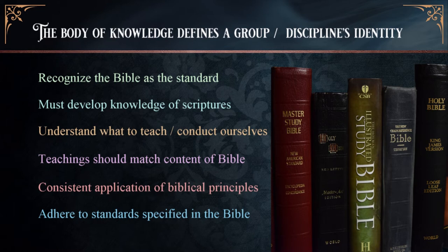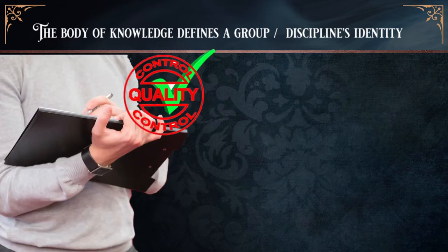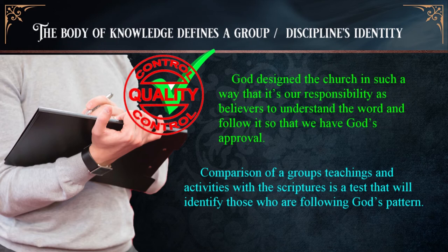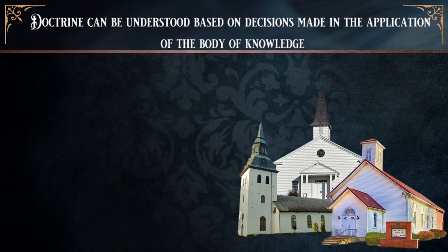Understanding the scriptures ultimately identifies us as followers of God and provides a consistent experience for those around us. There are groups who claim to teach the doctrine of the Bible, but close analysis reveals alterations that have been adopted. Unlike corporations like McDonald's, God doesn't send staff out to review a group's performance. God designed the church so that it's our responsibility as believers to understand the Word and follow it to have God's approval. Comparison of a group's teachings and activities with the scriptures is a test that will identify those following God's pattern.